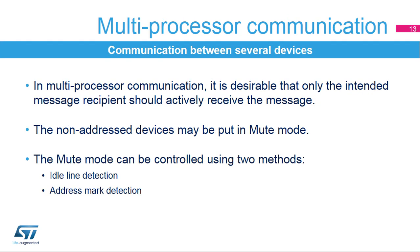To simplify communication between multiple processors, the LP UART supports a special multi-processor mode. In multi-processor communication, it's desirable that only the intended message recipient should actively receive the message. The non-addressed devices may be put in mute mode using two methods: idle line or address mark.